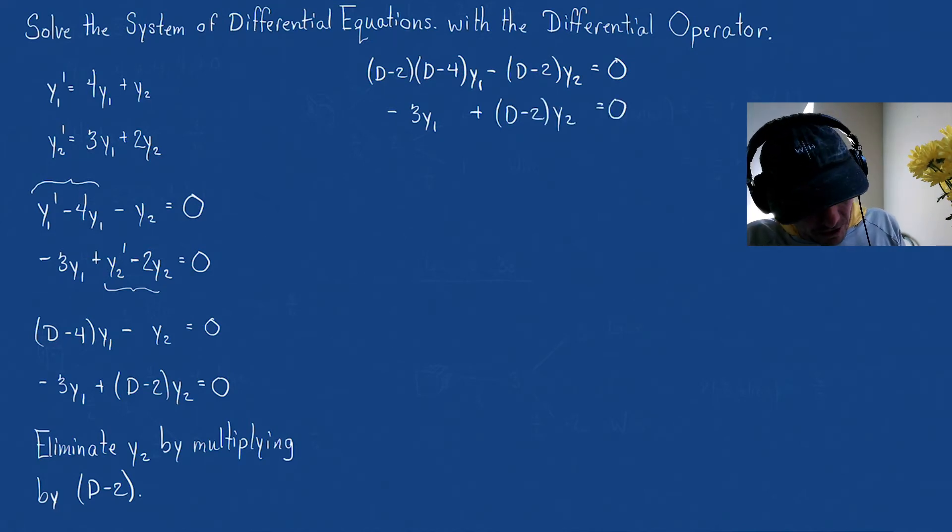And now if I just add the two equations, then what I have is (D - 2)(D - 4)y1 - 3y1 = 0. And let's distribute and then combine like terms.